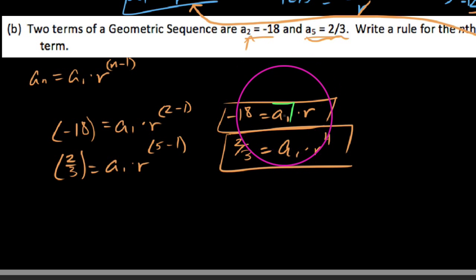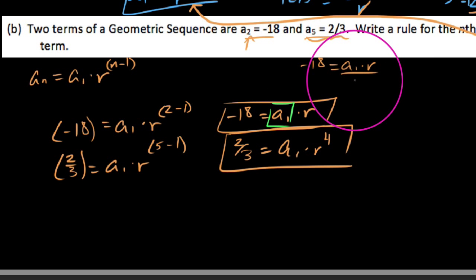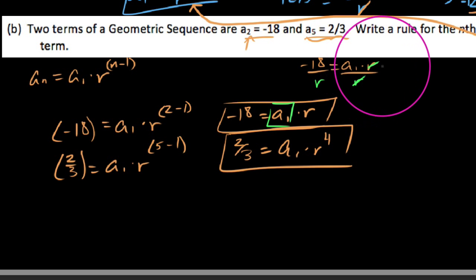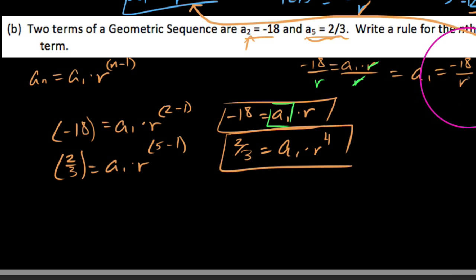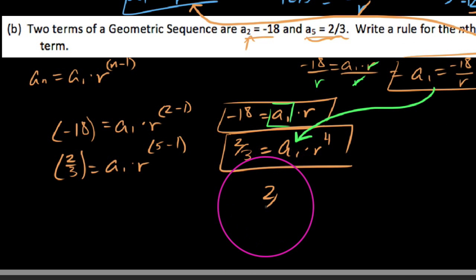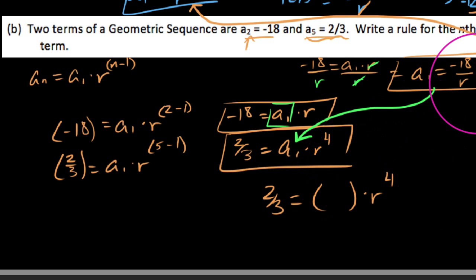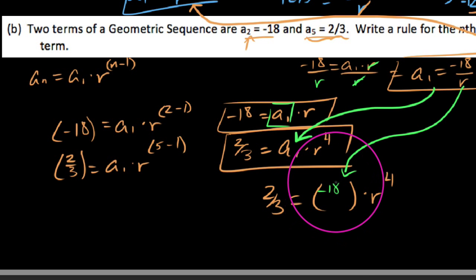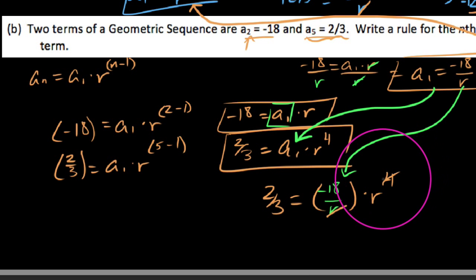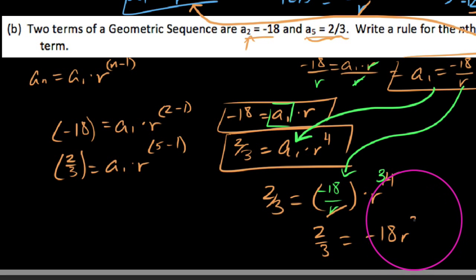Again, solving with substitution method. From the first equation, negative 18 equals a1 times r, we divide both sides by r so the r's cancel, giving us a1 equals negative 18 over r. Now substitution method says we plug this in to the second equation. So we have 2 thirds equals a1 times r to the fourth, and a1 is negative 18 over r. That r in the denominator cancels with one of the r's on top and leaves three behind. So we get: 2 thirds equals negative 18 r cubed.